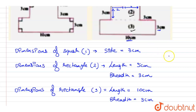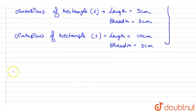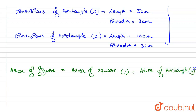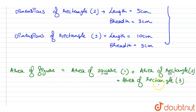So we have calculated all the dimensions of the given figure. Now we need to calculate the area. The area of the figure will be equal to the area of square 1, plus the area of rectangle 2, plus the area of rectangle 3.